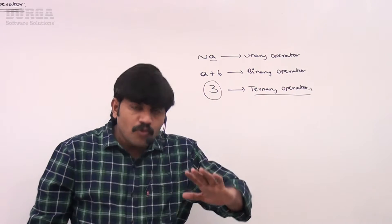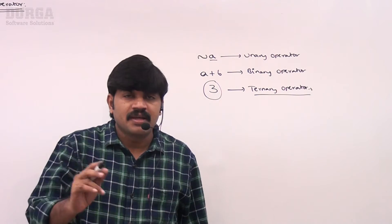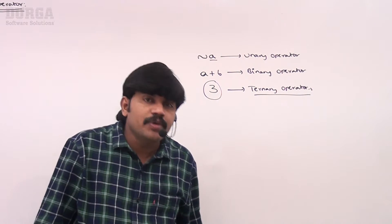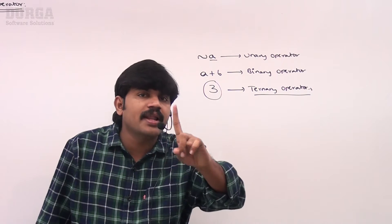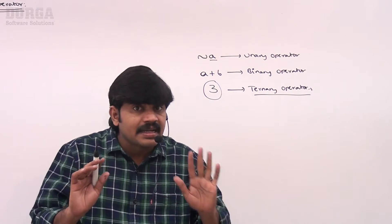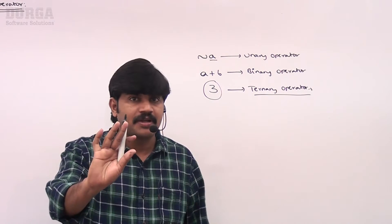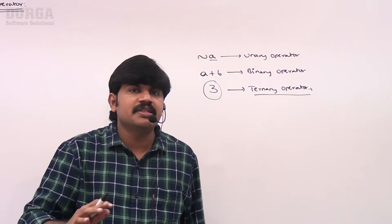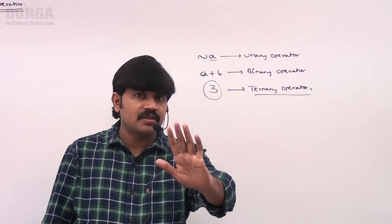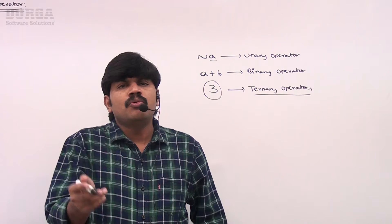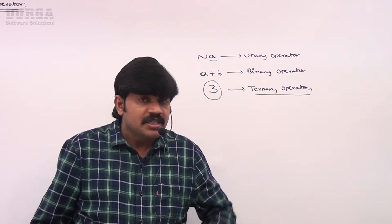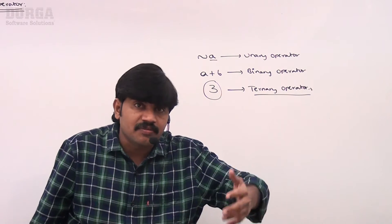Such a type of operator with three operands is called a ternary operator. In most programming languages — C, C++, or Java — there is only one ternary operator, which is also known as the conditional operator. Interchangeably, conditional operator and ternary operator refer to the same thing.